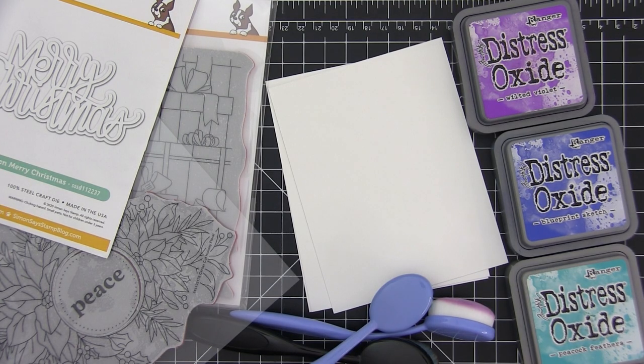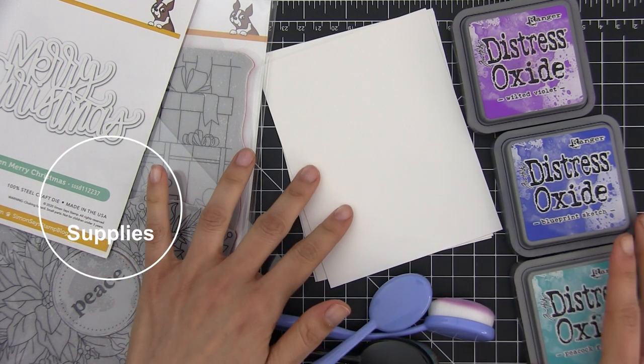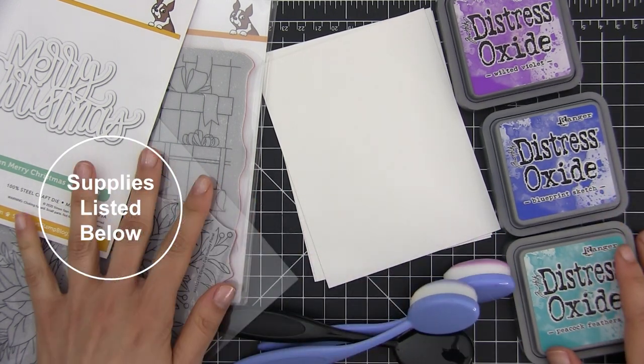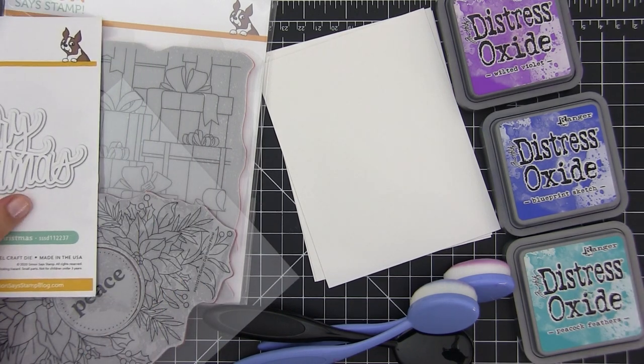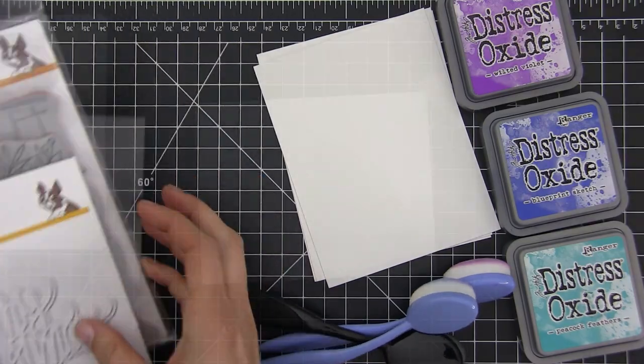These are some of the supplies I'm going to be using today: distress oxide inks, blenders, background stamps, a few die cuts, cardstock, and more things I didn't show here but you will see during the video.